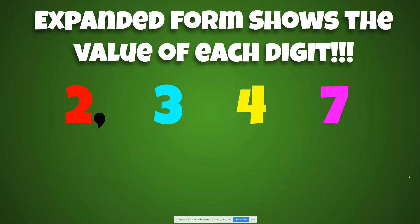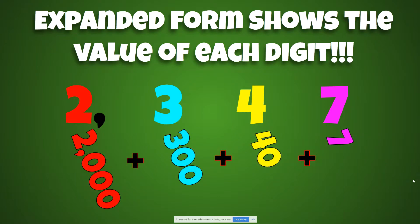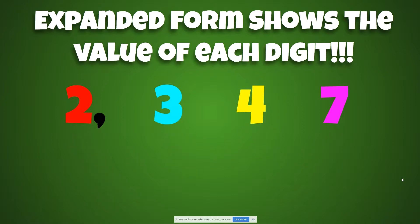Expanded form shows the value of each digit. So you see 2,000 plus 300 plus 40 plus 7. Look at that. It is expanded. So we can see every single amount.